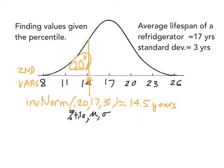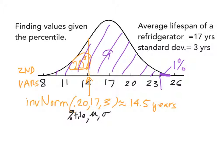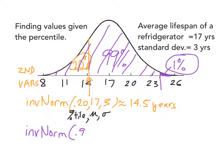So if a refrigerator lasts 14.5 years or less, that puts it in the bottom 20% of all refrigerators. If we flip it around and look at the top — what type of refrigerator puts me in the top 1% of all refrigerators — that means 99% of the refrigerators are to the left. Keeping that in mind, I put 0.99 as the percentile first, since it is lasting longer than 99% of all other refrigerators. That puts me at about 24 years when I type it into the calculator.